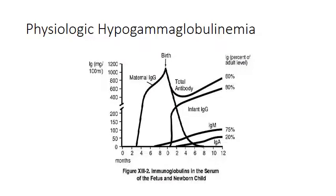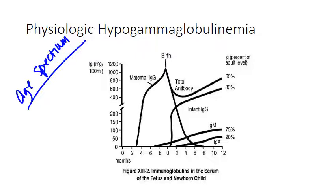Interestingly, hypogammaglobulinemia is actually kind of normal in infants. When we're born, we don't have really any of our own immunoglobulins — we have maternal IgG, and we actually have a full complement of that at birth. But over the first six months, that maternal IgG tanks, and it takes a couple of months for us to make a full complement of our own. Even at a year, we're only at 80% of the adult level of IgG.